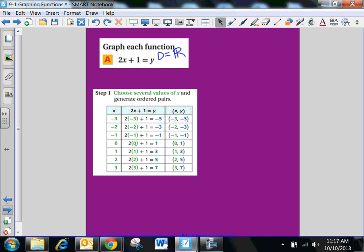And then here is step one. We're going to choose several values for x. Since it doesn't give us a domain, we're just going to choose values for x. We choose negative three to positive three just because that shows us a good range and good spread of the data.